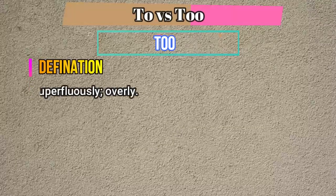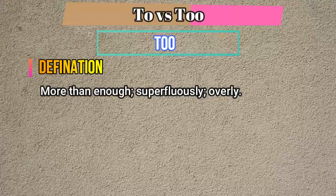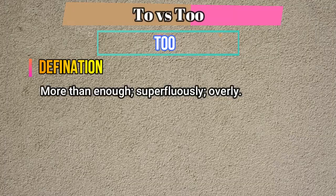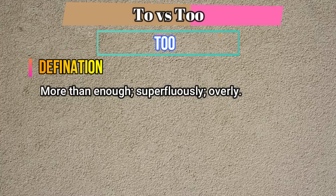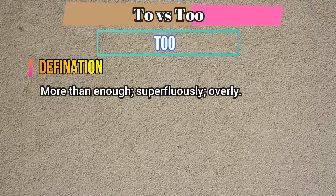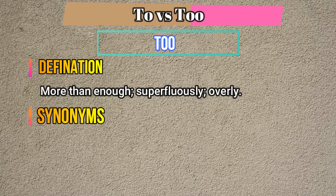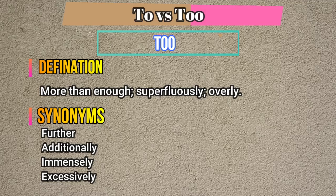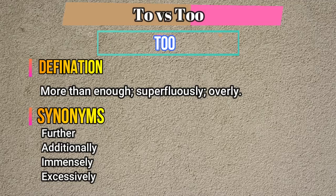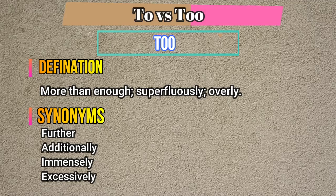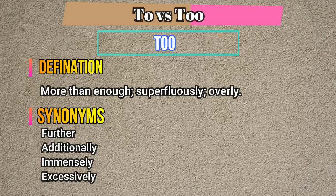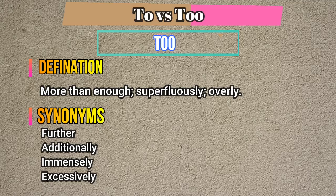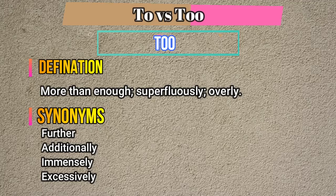The definition of 'too' is: more than enough, superfluously, overly. The synonyms of 'too' are: furthermore, additionally, immensely, excessively.